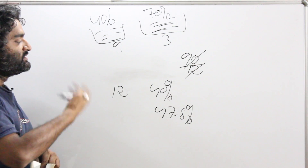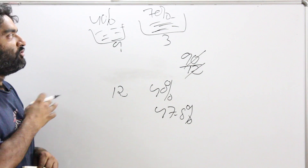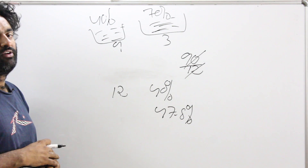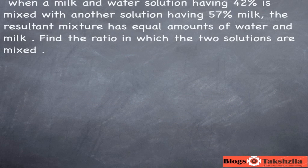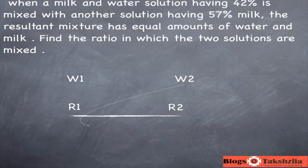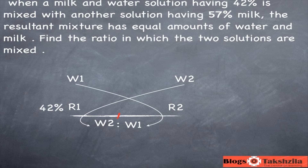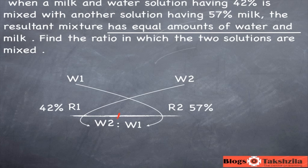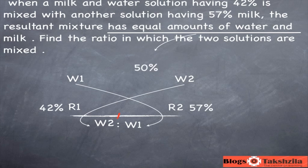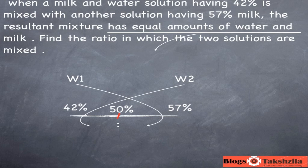We follow the same tripartite approach for the next few questions — use whatever method you're comfortable with, and revising each is also a good idea. In this next problem, draw the scale: 42% and 57% are the initial rates, so put them on the scale. The problem says the resultant mixture has equal amounts of water and milk, which means milk upon water is 1 to 1, or milk is 50% of total. So the resultant is 50% — put that in the middle of the scale.